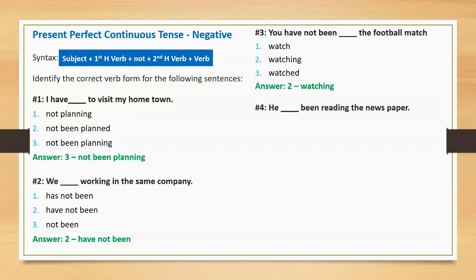Sentence four: 'He blank been reading the newspaper.' Options: has not, have not, and are not. Correct answer: has not. Full sentence: 'He has not been reading the newspaper.'